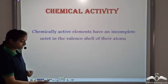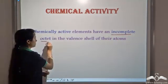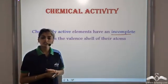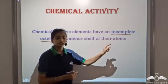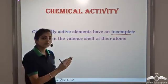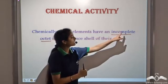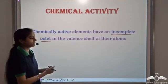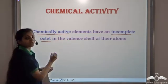Chemically active elements have an incomplete octet. We know noble gases do not participate in chemical reactions, that is why they are known as inert gases, and they also have a complete octet. So whenever any element does not have a complete octet, that is it has an incomplete octet, it takes part in chemical reactions to gain stability. And by taking part in chemical reactions, it becomes chemically active.